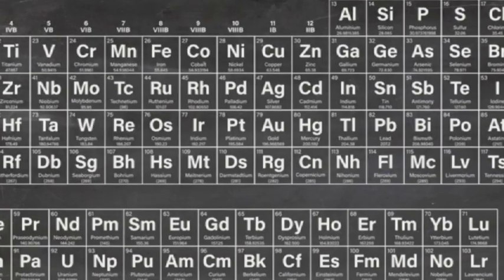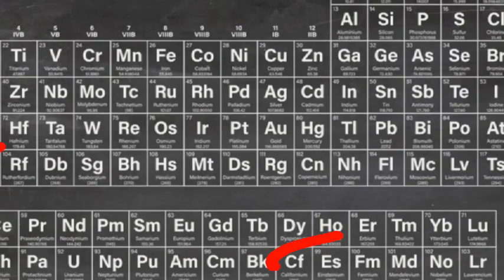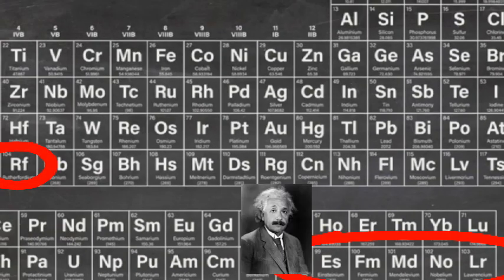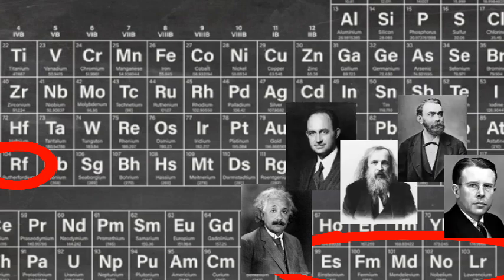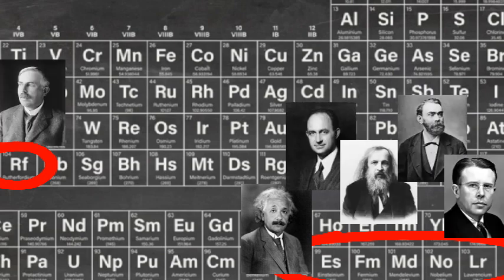There's a run of scientists from element 99 onwards: Einstein, Fermi, Mendeleev, Nobel, Lawrence and Rutherford.